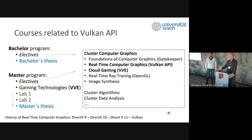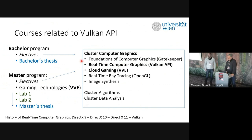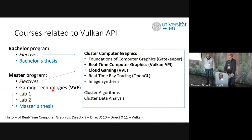The courses related to the Vulkan API can be taken at both bachelor and master level, and all of them are electives — not mandatory. We have nine clusters, and you can select electives within them. The course really focused on the Vulkan API is called Real-Time Computer Graphics. Other courses use the Vulkan engine: Gaming Technologies covers physics simulation and AI for games, and Cloud Gaming covers networking, game streaming, and video encoding.